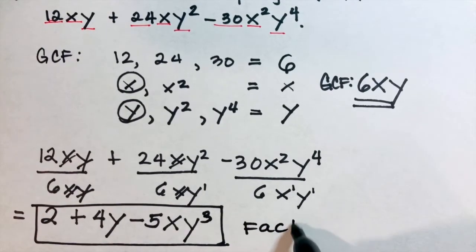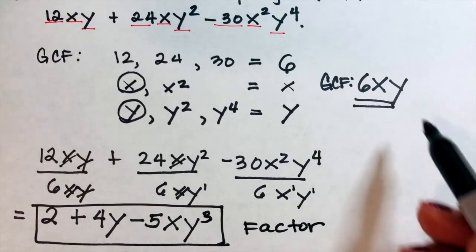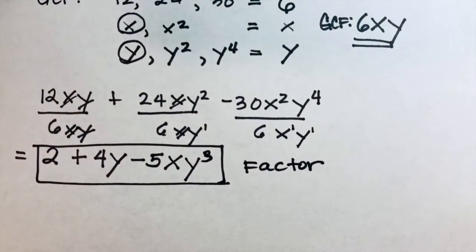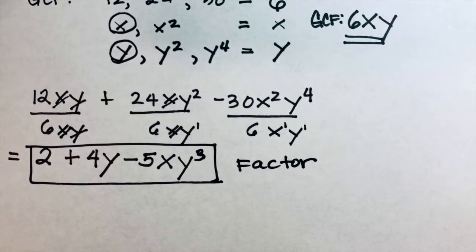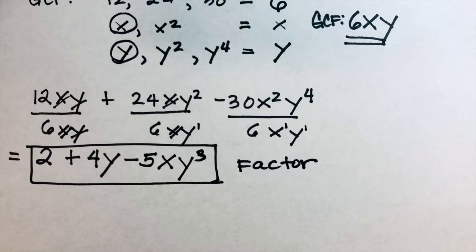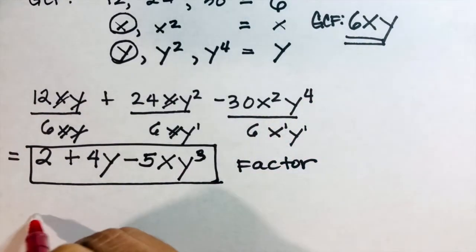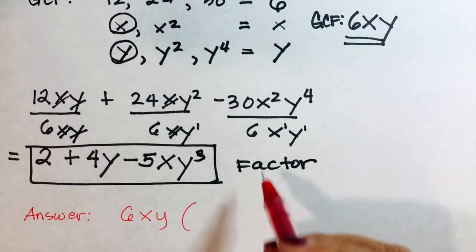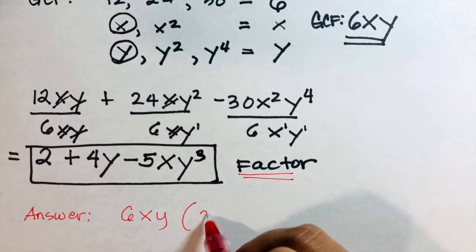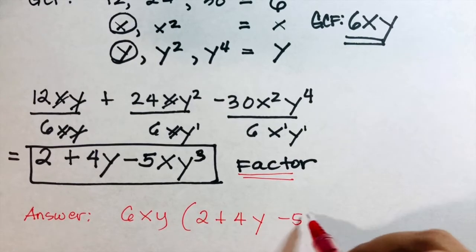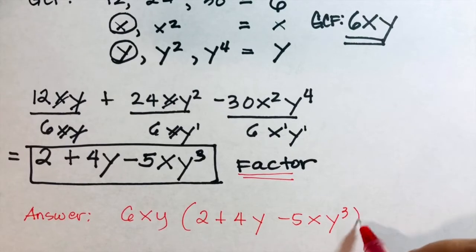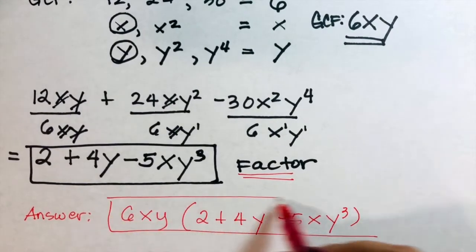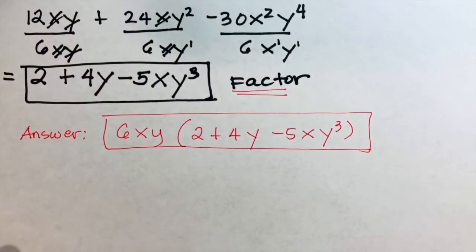The remaining factor is 2 plus 4y minus 5xy cubed. To write the final answer, the factors of 12xy plus 24xy squared minus 30x squared y to the fourth are the GCF 6xy times the remaining factor (2 plus 4y minus 5xy cubed).